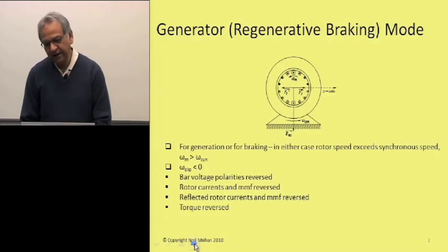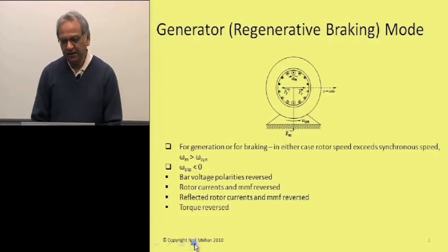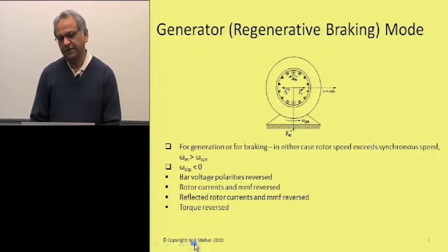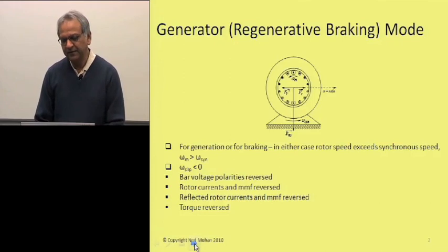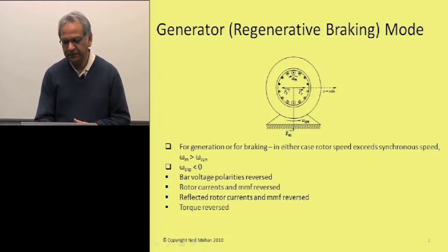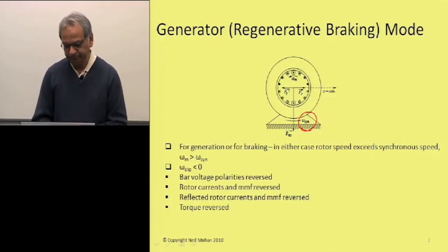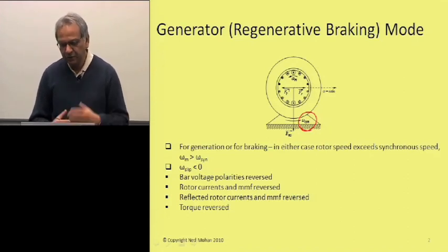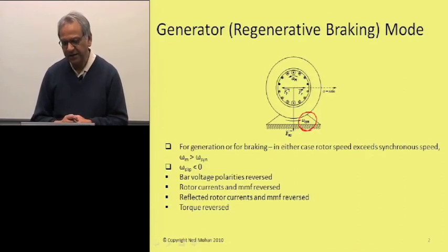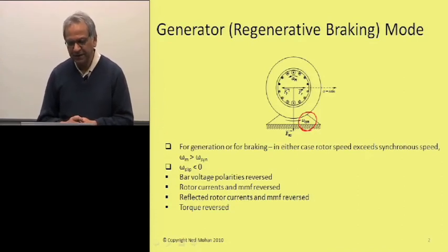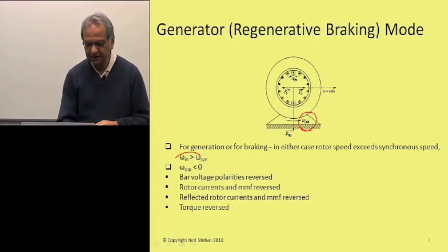Let's see how this induction machine, which we have seen earlier in a motoring mode, can become a generator. The machine is supplied from the stator side with voltages which produce a magnetic field distribution in the air gap rotating at the synchronous speed based on the frequency applied to the stator windings. Through a prime mover, the rotor is being rotated at a speed omega sub m, which is greater than the synchronous speed.